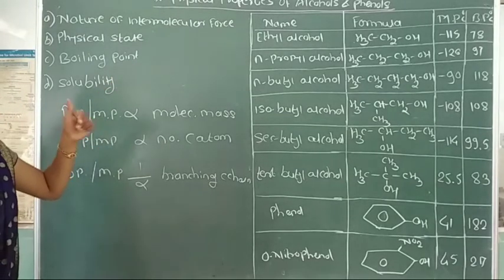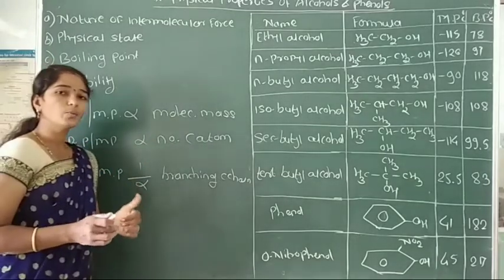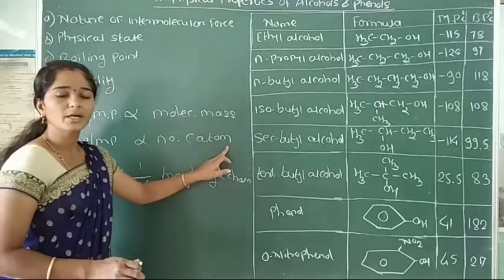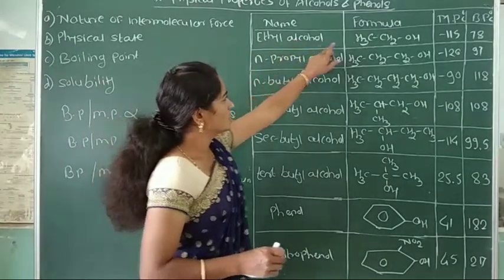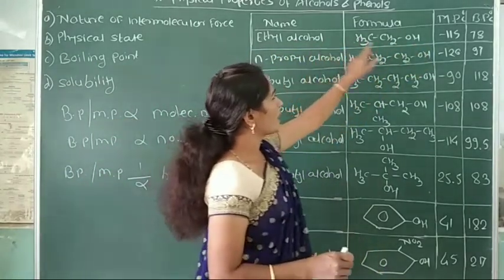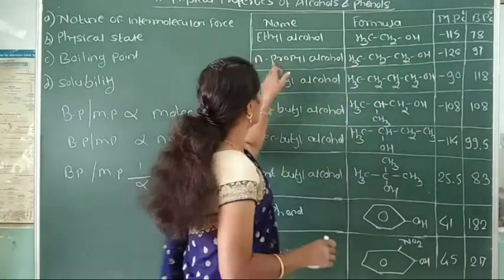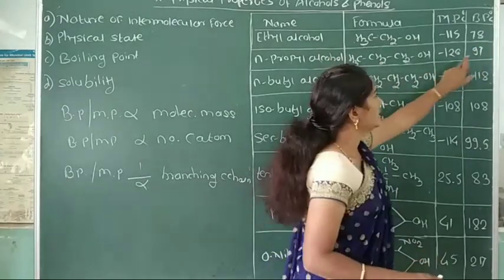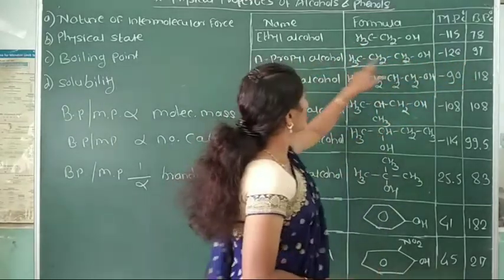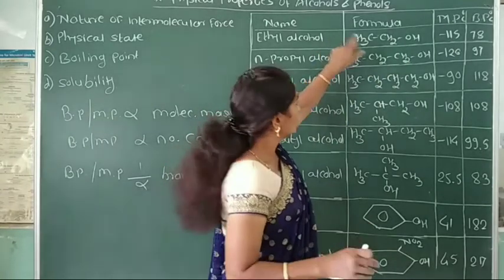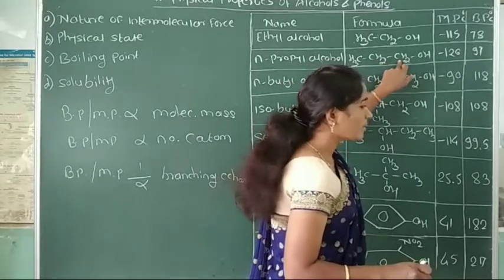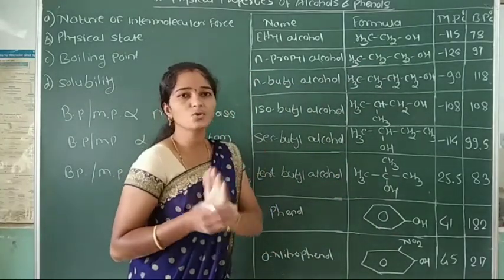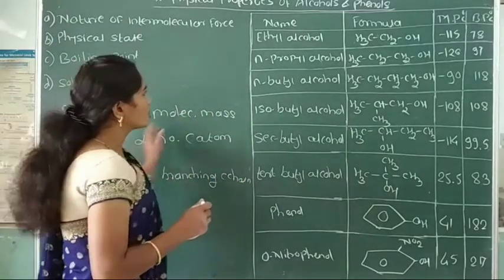Boiling point and melting point of alcohols and phenols increase when you increase the molecular mass of compounds or increase the number of carbon atoms. For example, ethyl alcohol CH3CH2OH has a melting point of minus 115°C and boiling point of 78°C. In the second example, n-propyl alcohol — here melting point and boiling point of this n-propyl alcohol increases compared to ethyl alcohol, because the number of carbon atoms increases as well as molecular mass increases.